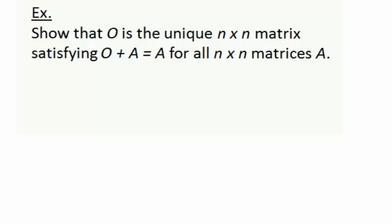Our first example: we're going to show that the zero matrix, represented by capital O, is the unique n by n matrix satisfying O plus A equals A for all n by n matrices A. Notice the keyword 'unique' is inside this statement, so we need to find the object claimed to be unique and its special property.